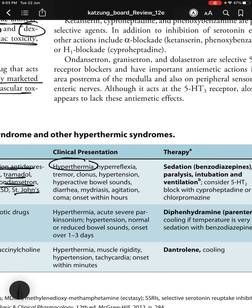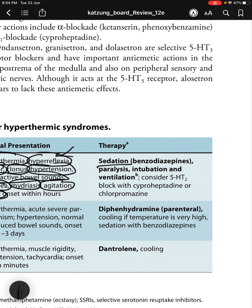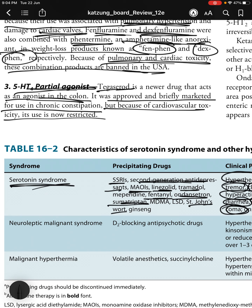Clinical presentation of serotonin syndrome includes hyperthermia, hyperreflexia, clonus, hypertension, hyperactive bowel sounds, diarrhea, mydriasis, agitation, coma, and tremor. Therapy includes sedation with benzodiazepines, paralysis, intubation and ventilation, and consideration of 5-HT2 blockade with cyproheptadine or chlorpromazine.